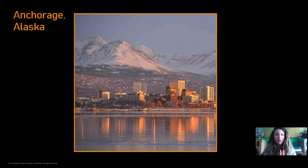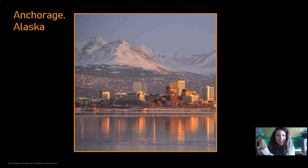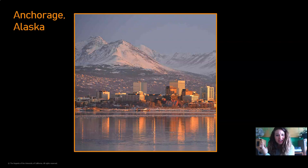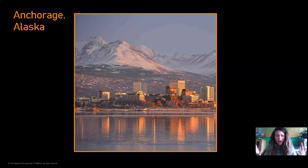We're going to practice making predictions about weather over time by using three different cities. Take a look at this city — it's called Anchorage and it's in Alaska. Do you know anything about Alaska? If you've never heard of Alaska before, take a look at this picture. Does it look like a warm place or a cool place? I think it looks like a cool place because those mountains are covered in snow, and I know that snow is pretty cold. Let's take a look at some weather data for a year in Anchorage.